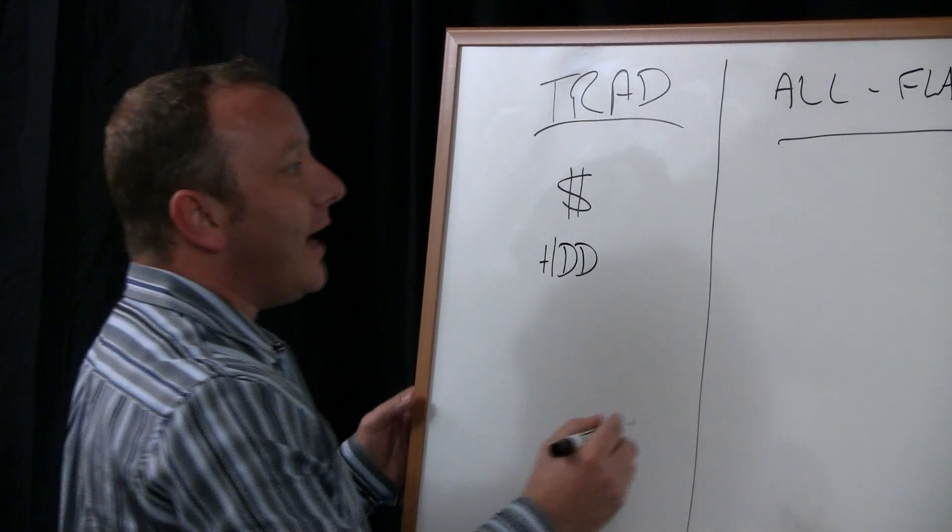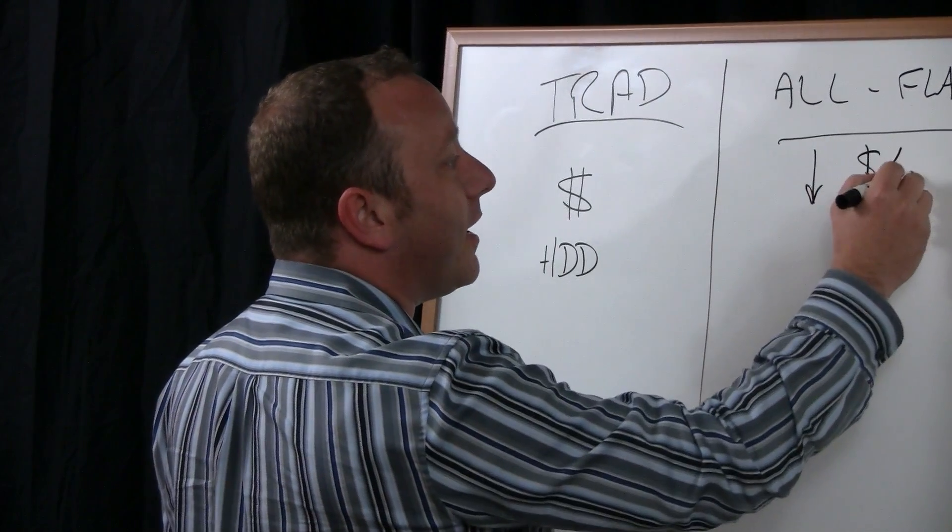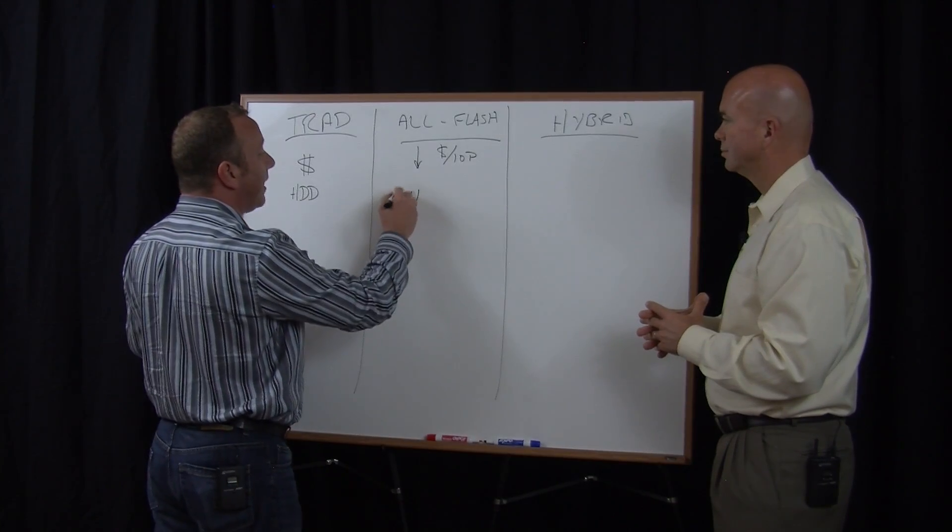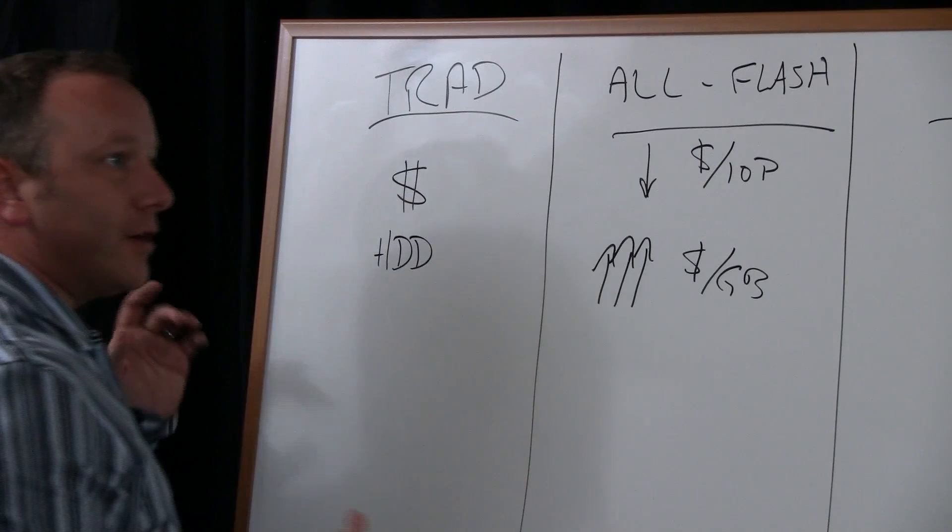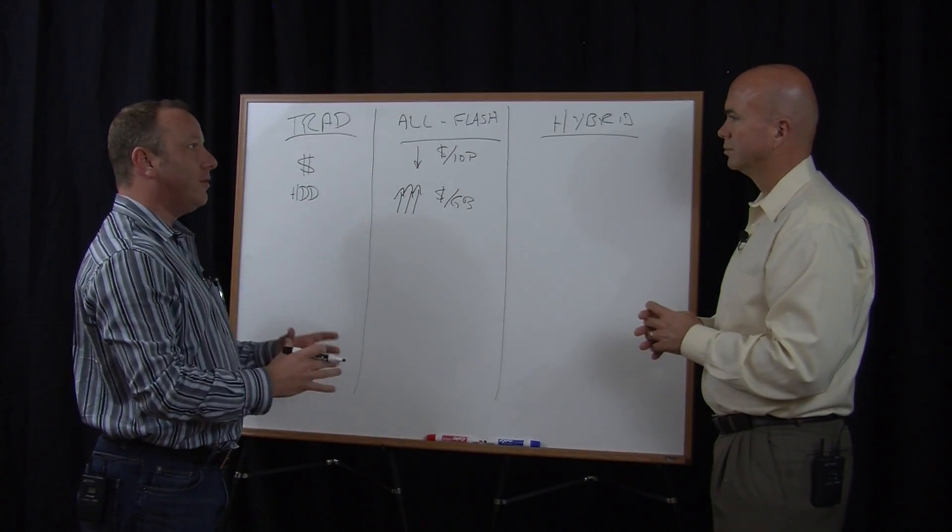Right. And the all-flash guys come in and they've got a very low dollars per IOP from a performance perspective. But an extremely high dollars per gigabyte.